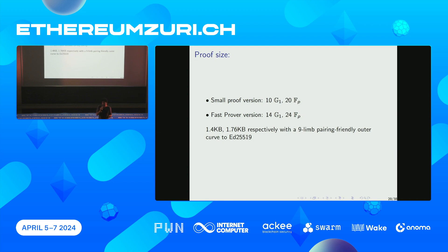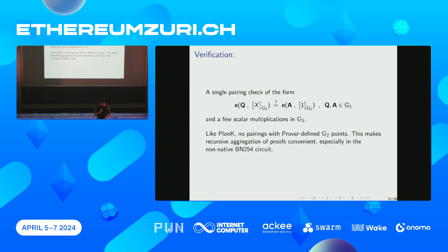We have two variants: the small proof and the fast proof variant. The small proof is 10 G1 points and 20 elements in FP — that's 1.4 KB. The faster one has 14 G1 points and 24 elements — that's 1.76 KB. For verification, it's pretty straightforward: a few scalar multiplications in G1. Similar to Plonk, we don't have any pairings in G2, so recursive aggregation is possible.